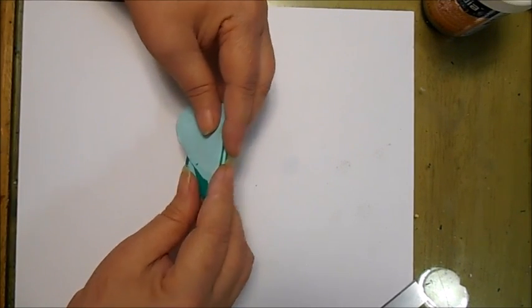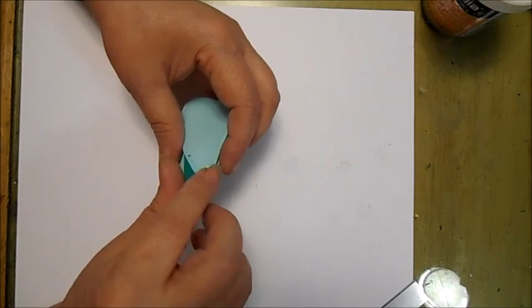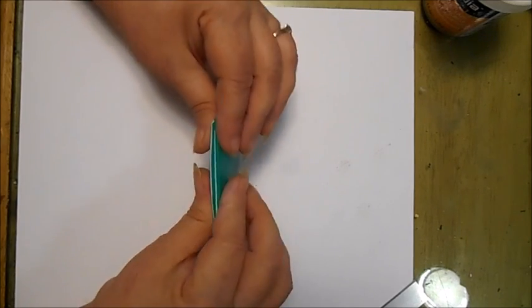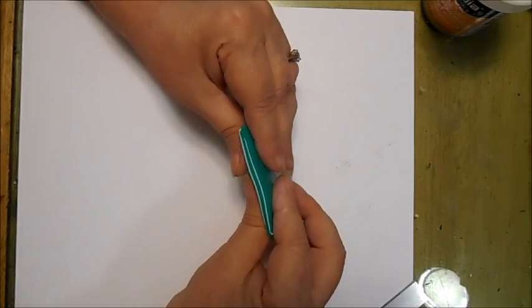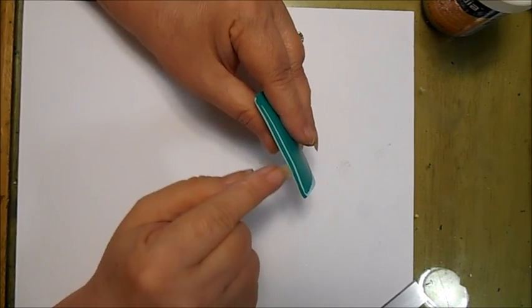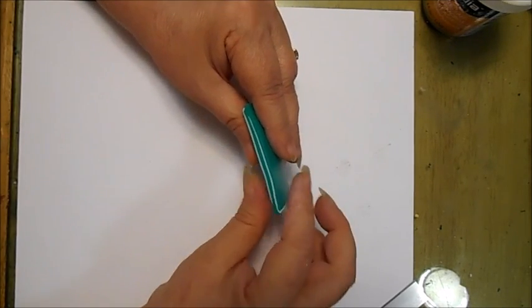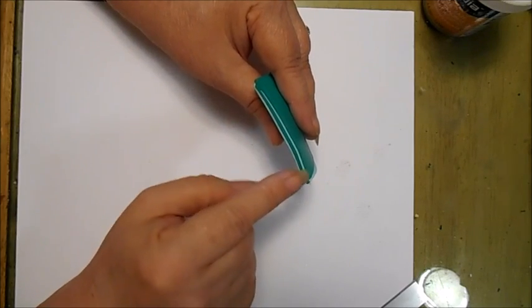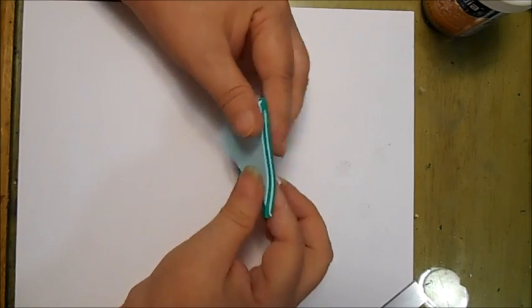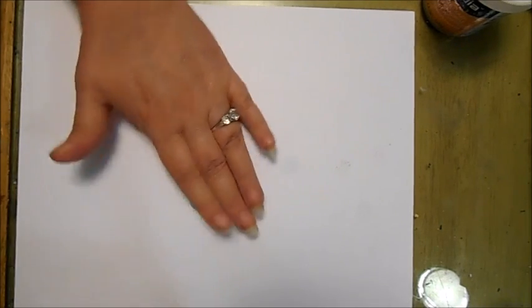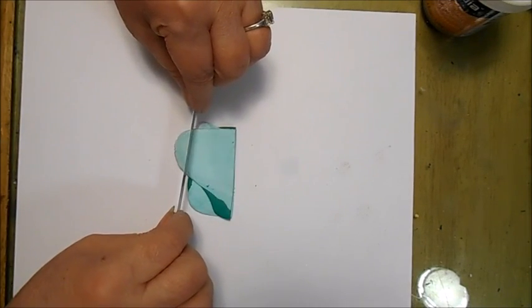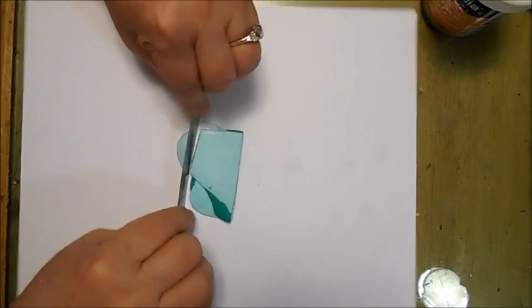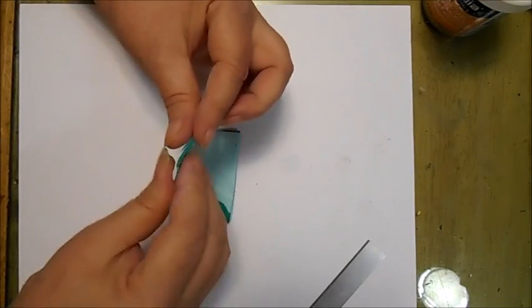Another thing you might have noticed is I didn't start with the two pieces the same thickness. As you can see, the green is quite a bit thicker than the white, and this end of the green is even thicker than the other end. The reason I did that is because malachite is like that. The layers are not even.